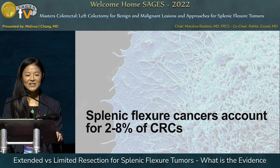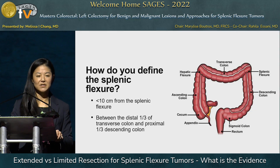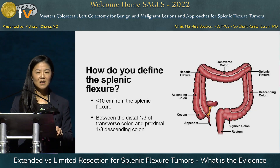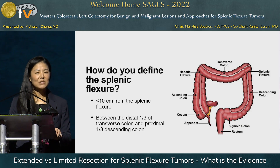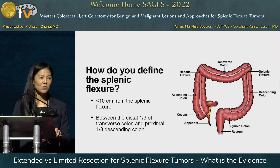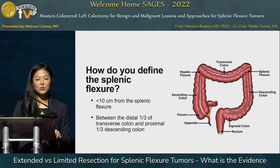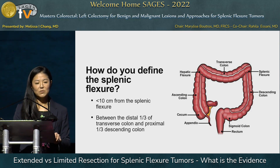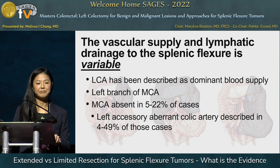Splenic flexure cancers account for about 2 to 8 percent of colorectal cancers. The first question is: how do we define the splenic flexure? This has been described as less than 10 centimeters from the splenic flexure, or between the distal one-third of the transverse colon and the proximal one-third of the descending colon.